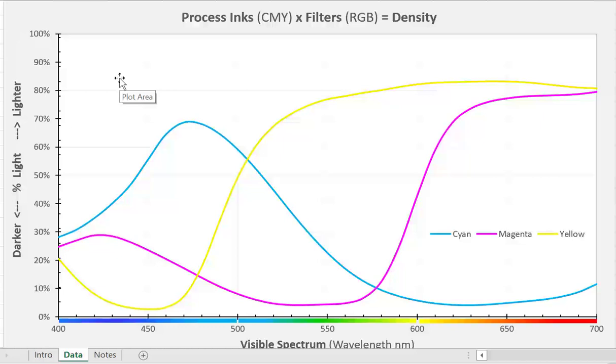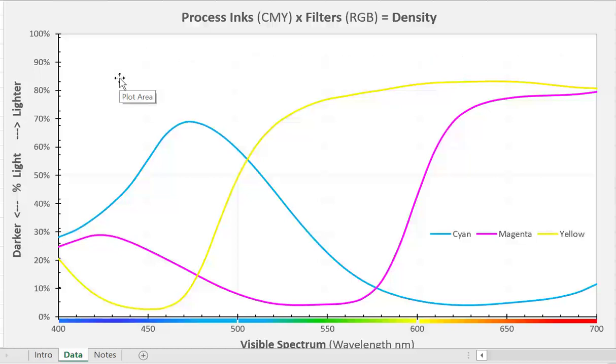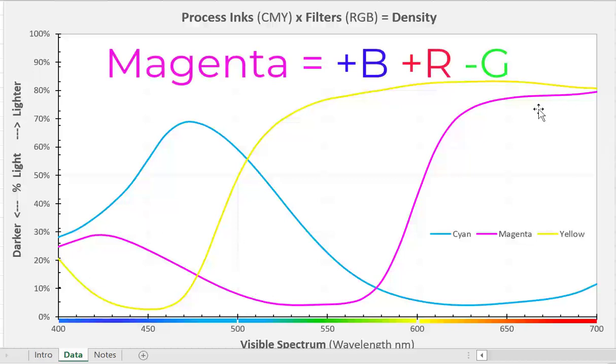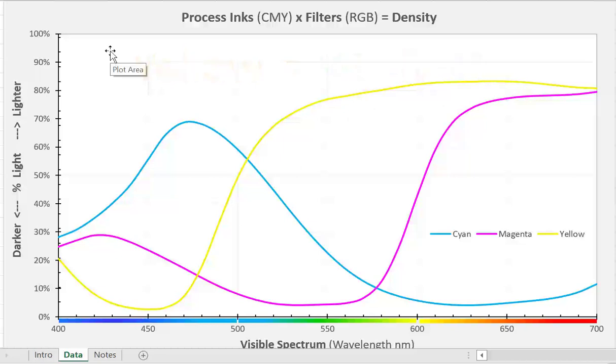Let's take a look at cyan. Process color inks are transparent filters. They transmit two-thirds of light and absorb one-third. In the case of cyan, cyan is transmitting blue and green but absorbing the red. Magenta is transmitting the blue and the red but absorbing the green. And yellow ink is transmitting the green and the red but absorbing the blue. So process color inks are transparent filters that transmit two-thirds and absorb one-third.